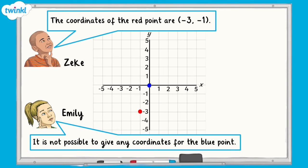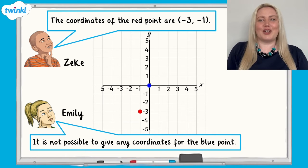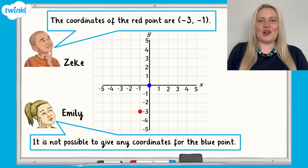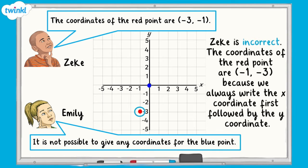I think that you're ready for a challenge now. Zeke says that the coordinates of the red point are negative 3, negative 1. Emily says it's not possible to give any coordinates for the blue point. Do you agree or disagree with the statements made by Zeke and Emily? Remember to give a reason for your answers. Pause the video now and have a go. Zeke is incorrect. The coordinates of the red point are negative 1, negative 3, because we always write the x-coordinate first, followed by the y-coordinate.